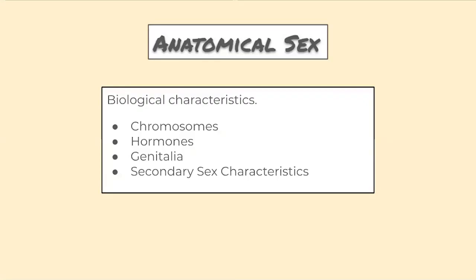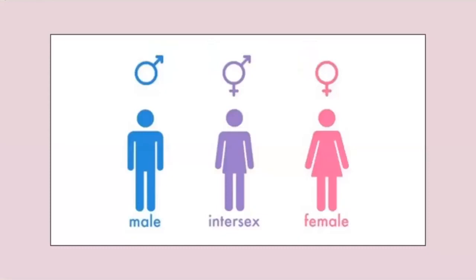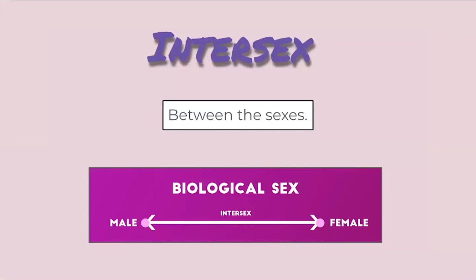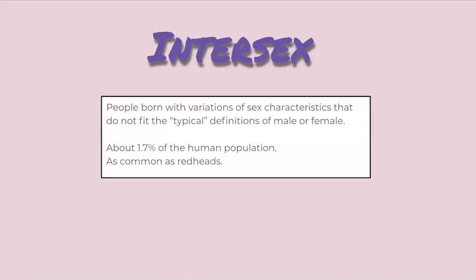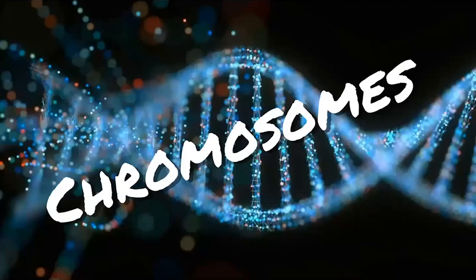The sexes are male and female, but there's also intersex, which just means between the sexes. Basically, anyone who doesn't fit the typical definitions of male and female based on chromosomes, hormones, genitalia, and secondary sex characteristics is considered intersex. It's actually pretty common — about 1.7% of the human population, which is about as common as naturally born redheads.